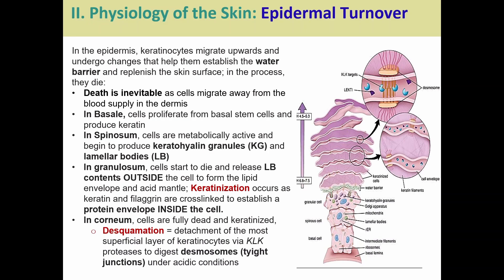Waste products can't diffuse away as easily, so as we get to the surface, cell death happens regardless. In the basal layer — our basal stem cell layer — we're producing keratin and generating those keratinocytes. As they move up to the spinosum, we're metabolically active, making keratin granules and lamellar bodies for lipid protection. They then move to the granulosum, where cells start actively dying and releasing lipids outside to form the lipid envelope, while keratin fibers inside cross-link to form a protein envelope.